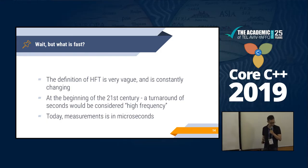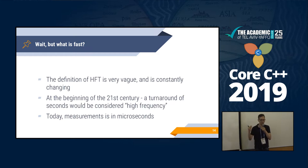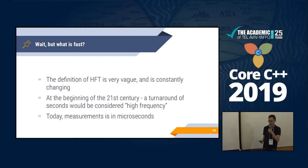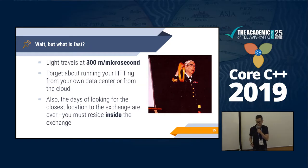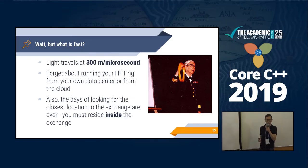A bit about what 'fast' means in our world. This is vague and constantly changing — at the start of the 21st century, if you could react to market events within seconds, you'd be considered high-frequency trading. Today we're talking about microseconds. Microseconds is not a lot — light travels 300 meters per microsecond. In the picture you have Grace Hopper, who developed the first compiler, and she's holding a microsecond — that's a cable of 300 meters.